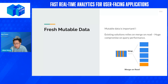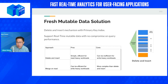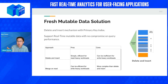On mutable data: a lot of people do merge-on-read. We do a more simplistic approach — delete and insert — which is very efficient for read-heavy workloads. We have three table types in StarRocks: a primary key table that lets you do deletes and upserts, an aggregate key table, and a duplicate key table. The primary key table is where you can do mutations at different parts of the data store.